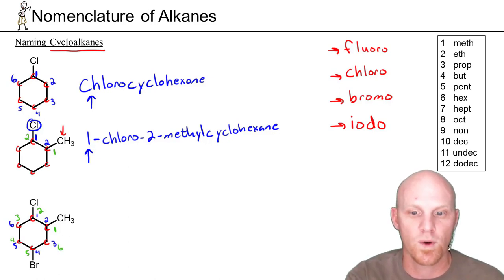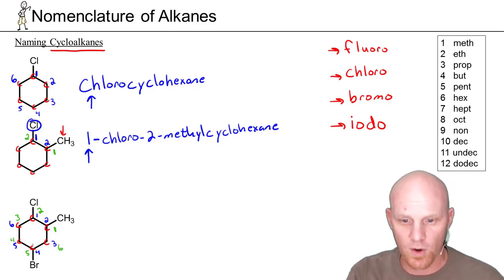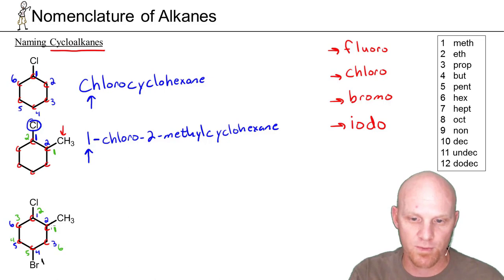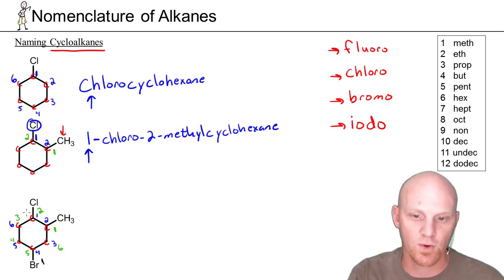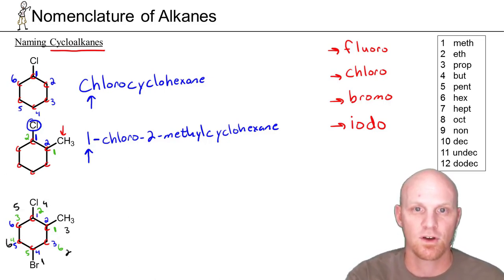There's one more numbering option: start where the bromine is located as number 1. Going counterclockwise, we hit the methyl group at 3, whereas going clockwise we wouldn't hit the chlorine until 4. So counterclockwise is superior here, giving positions 1, 2, 3, 4, 5, and 6.